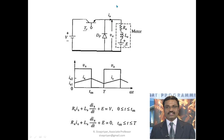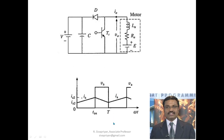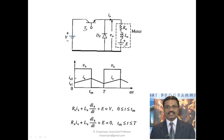That is the difference between the chopper control of a separately excited DC motor and the chopper control of a series motor — just add one series field winding. Operation and waveform everything remains the same. In motoring mode, whenever the switch is turned on, current flows from the transistor through the armature A1 to A2, then to V−.